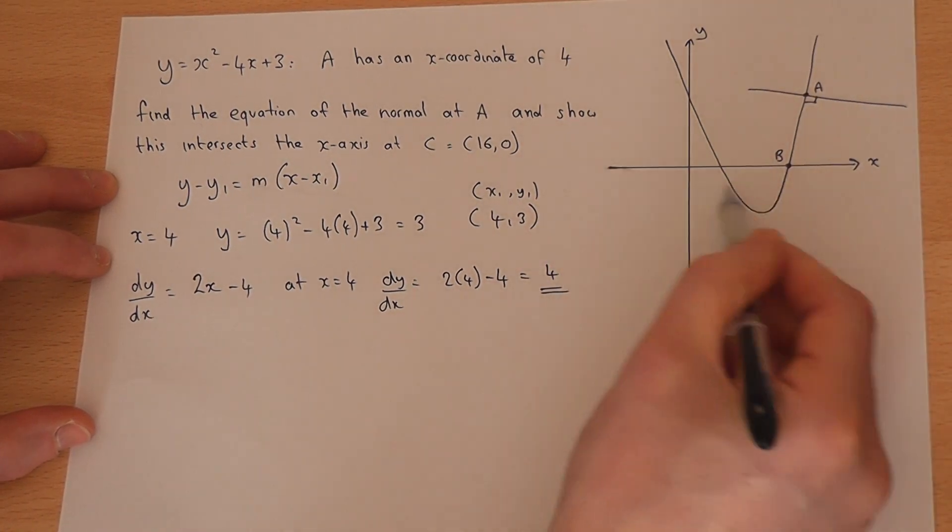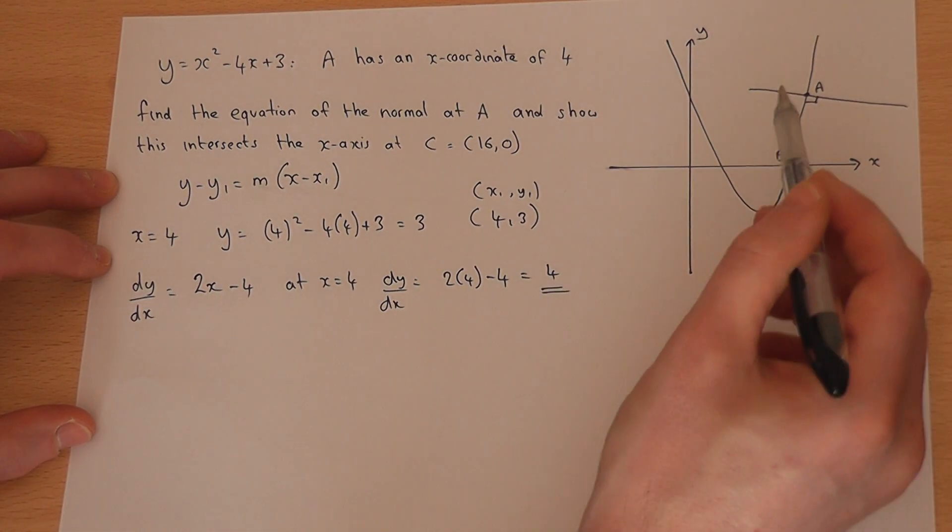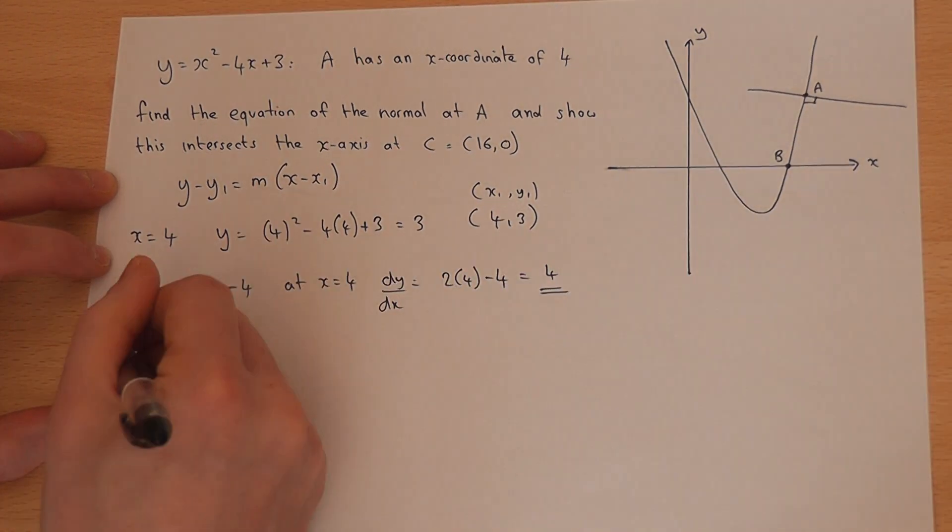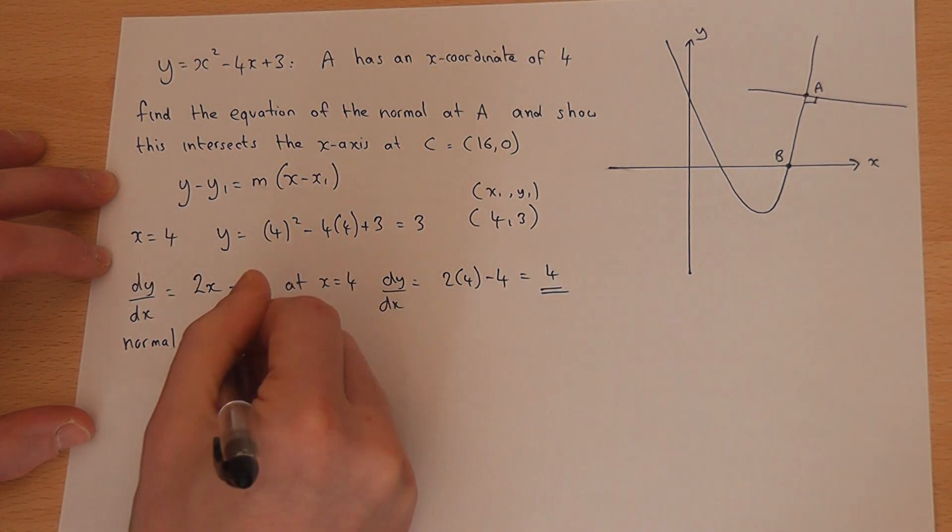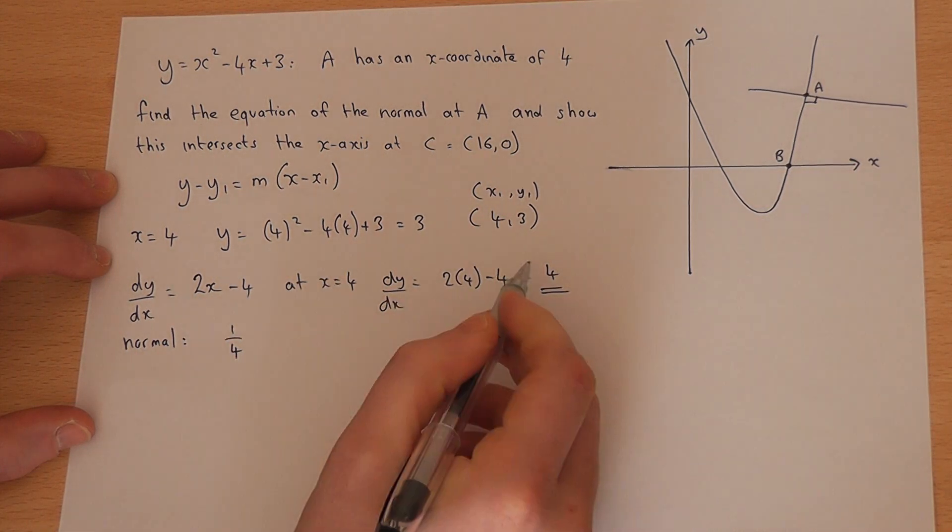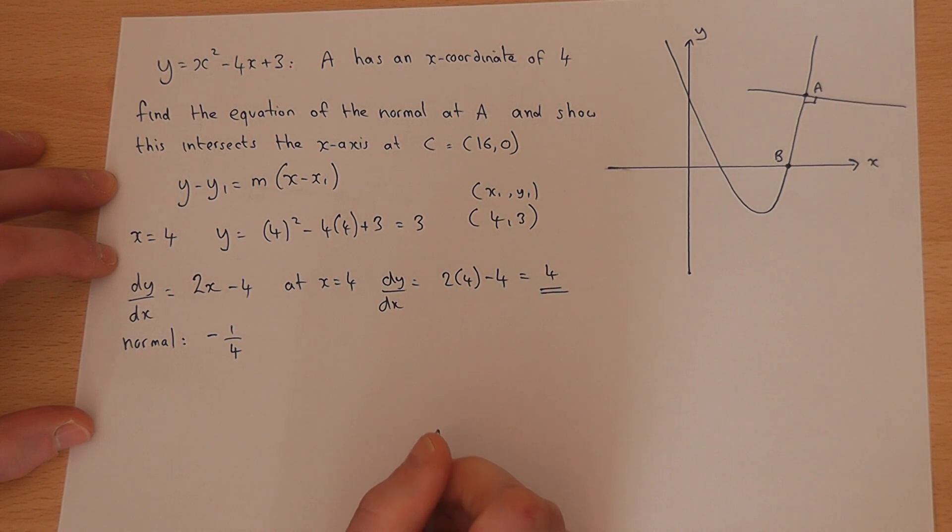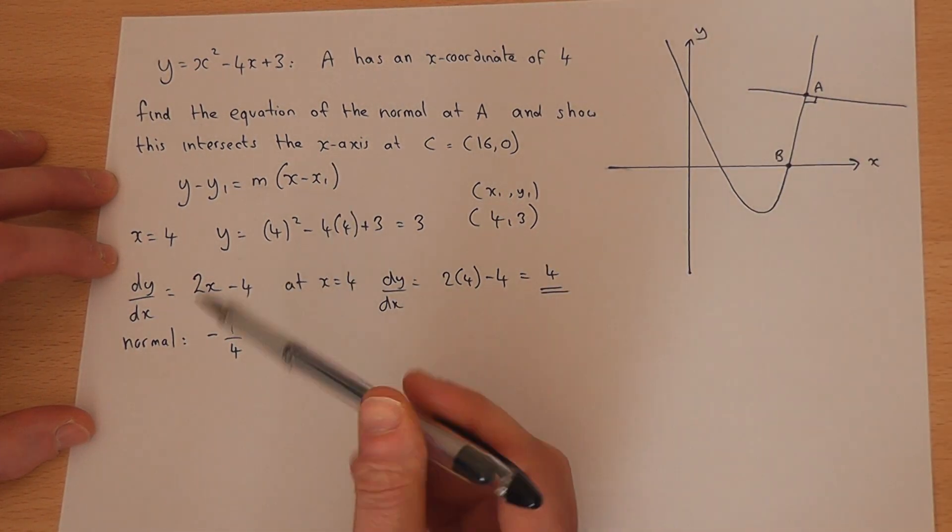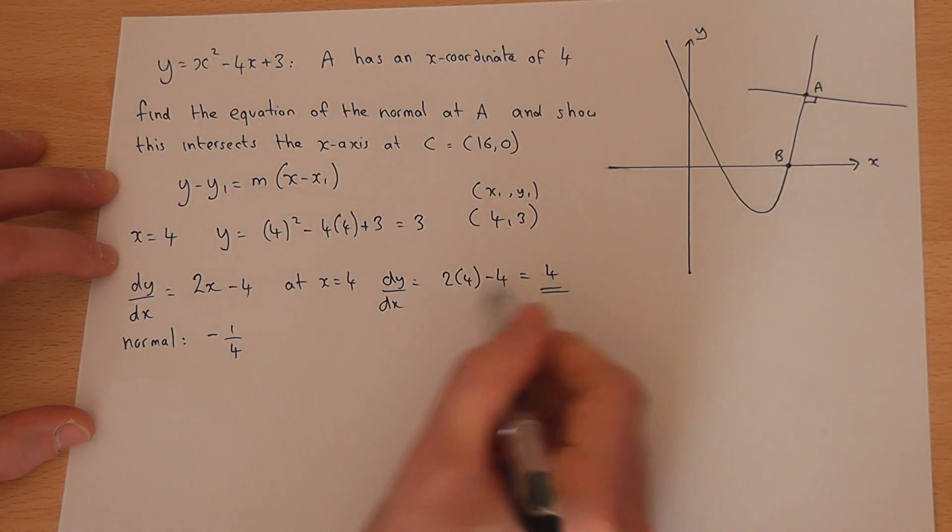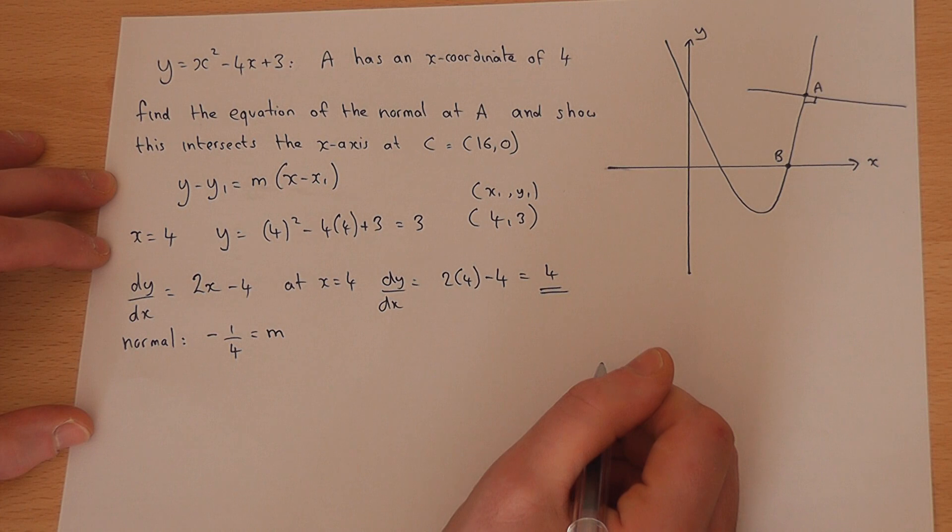The curve, and therefore the tangent, has a gradient of 4. But our line is a normal, so the normal will have gradient -1/4. This rule comes from the fact that when two lines are perpendicular (a tangent and normal), to find the gradient we reciprocate and change the sign. Therefore m = -1/4.